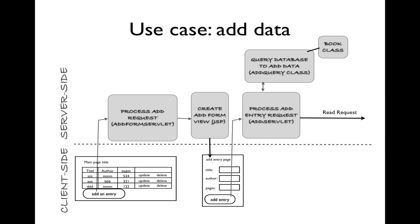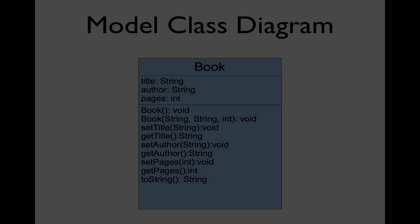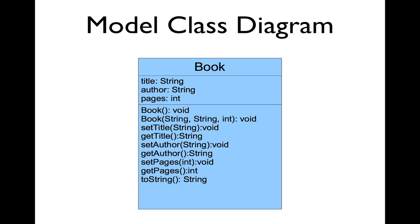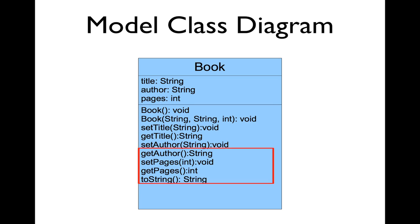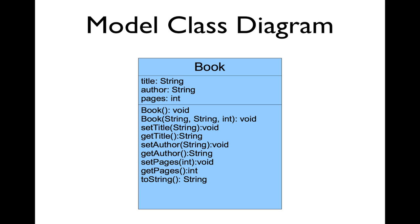For the Add Data component, we'll need to create four additional components to handle this use case. This class diagram illustrates a book class that we'll create to correspond to the table in our database. We'll have title, author, and pages as fields, two overloaded constructors, getters and setters for each instance variable, and a toString method. We'll use this class as needed when we create, read, update, and delete books in our book database.